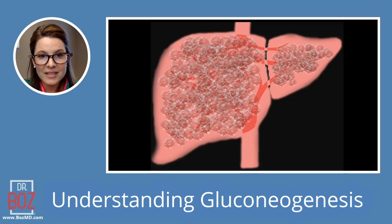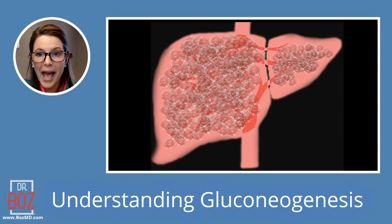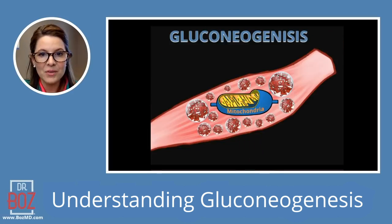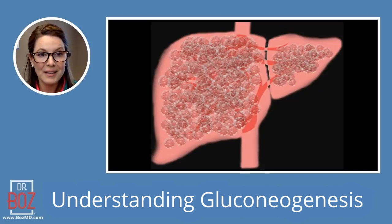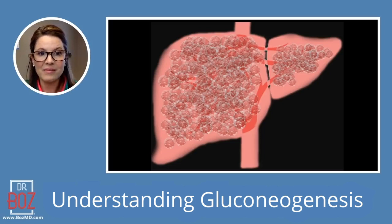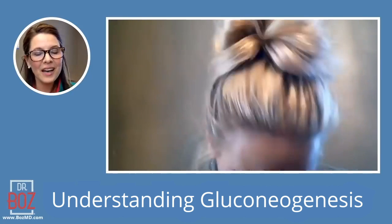Inside the liver there are far more glycogen bubbles filled with glucose per square inch compared to a muscle cell. However, when you look at the total mass of the body, we actually store more glycogen in our muscles than in our liver, because we only have one liver. Even though the liver can get quite large, it's never the same mass as all our muscle cells combined — we have an incredible volume of muscle cells each storing little glycogen bubbles.